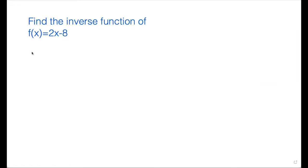So we have a problem here where f(x) equals 2x minus 8. We are asked to find the inverse function of this function. As we know, f of x is actually y. We can write it as y equals 2x minus 8. That is the first step.